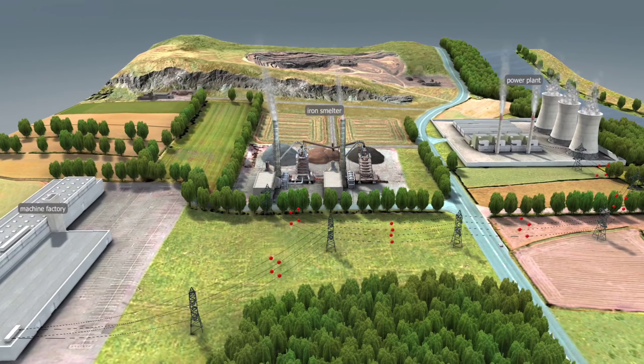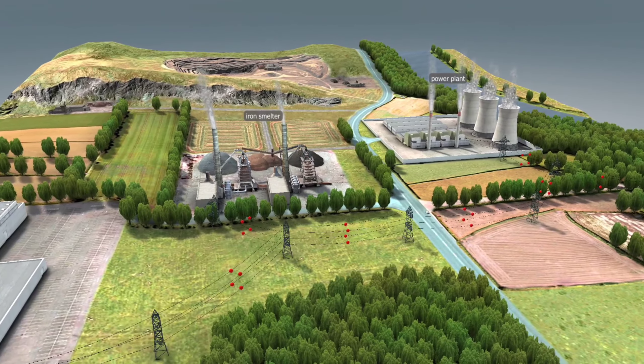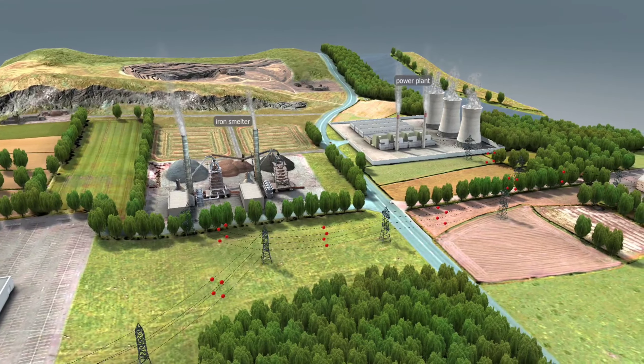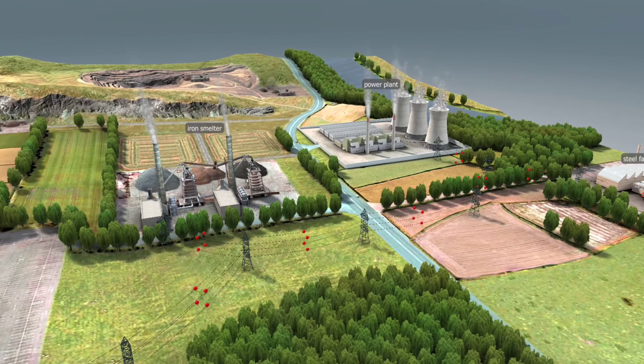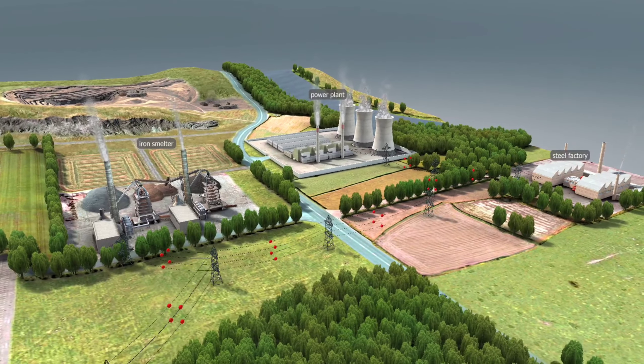During the process of steel making, carbon and other impurities are removed from pig iron. Then other elements are added.